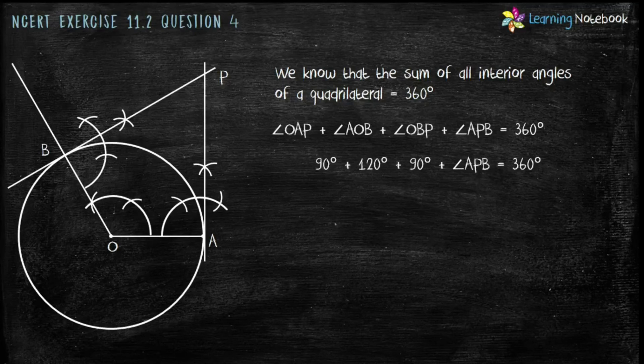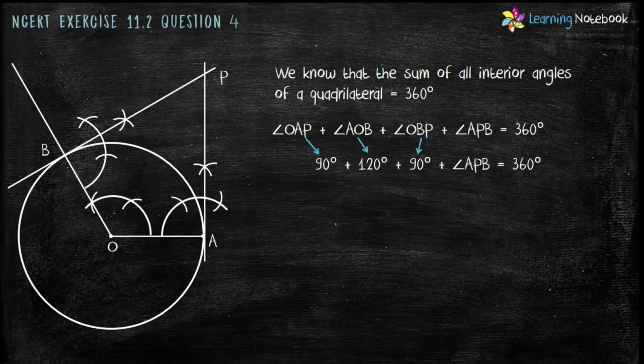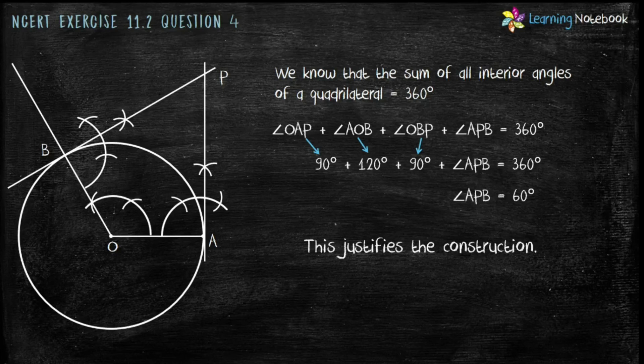Put the values and we get 90 degrees plus 120 degrees plus 90 degrees plus angle APB equals to 360 degrees. Solve it and we get the value of angle APB equals to 60 degrees. Hence, we have justified the construction.